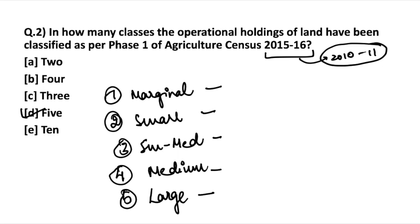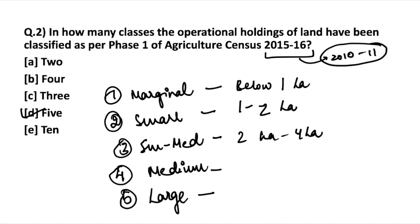The size classes are as follows: marginal is below 1 hectare; small ranges from 1 to 2 hectares; semi-medium is from 2 to 4 hectares; medium is from 4 to 10 hectares; and large is 10 hectares and above. These classifications are used in phase 1 of the agriculture census for both 2010-11 and 2015-16.